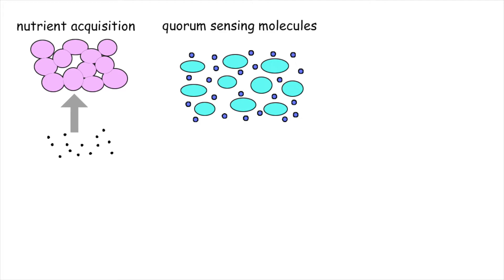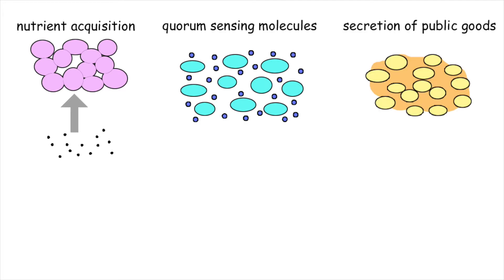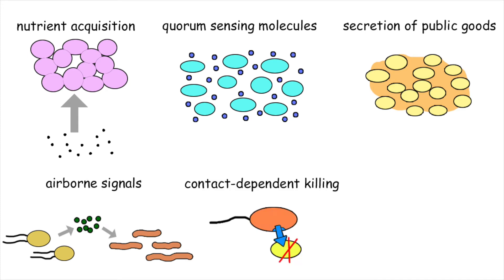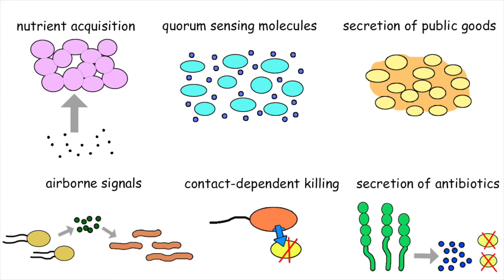On the cooperation end of things, classic examples include quorum sensing and the secretion of compounds that can be considered as public goods. Microbes can also coordinate their behaviour and communicate with more distantly located organisms through the release of airborne volatile compounds. On the competition end, bacteria can directly kill each other or they can use antibiotics to inhibit the growth of others.